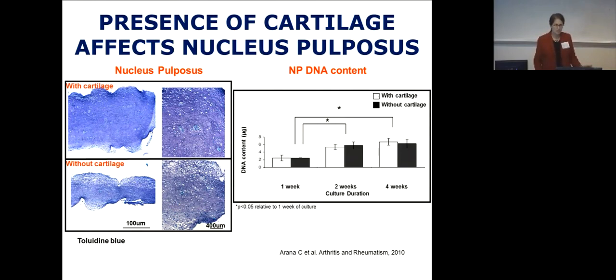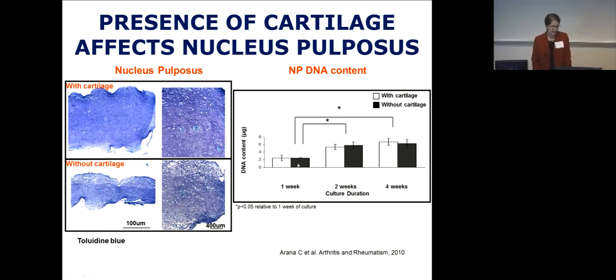We quantified this and confirmed significant differences. We wondered whether the difference in tissue amount was due to cellularity — whether nucleus pulposus cells proliferated better in the presence of cartilage. When we measured the DNA content, there was really no difference in cellularity over time. So it was truly an effect of the cartilage itself stimulating the nucleus pulposus cells to accumulate more matrix and make a better tissue.